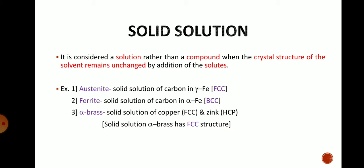Further in this chapter, we are going to see steels and cast irons, where we will see solid solution phases such as austenite and ferrite. In non-ferrous alloys, we will see alpha brass. All these phases are solid solution phases.